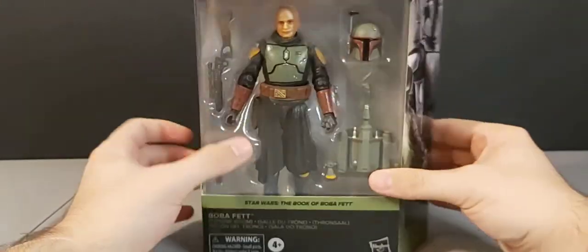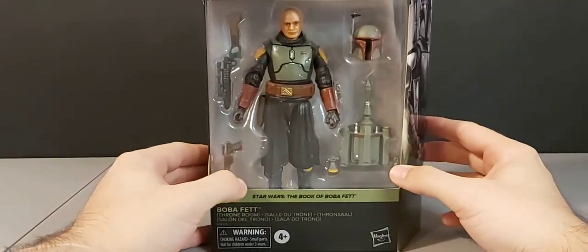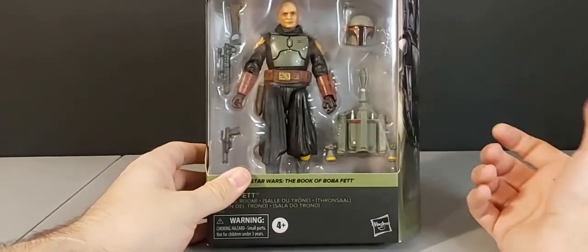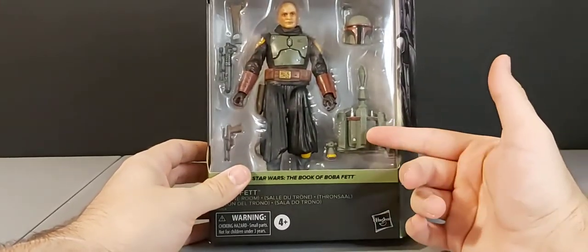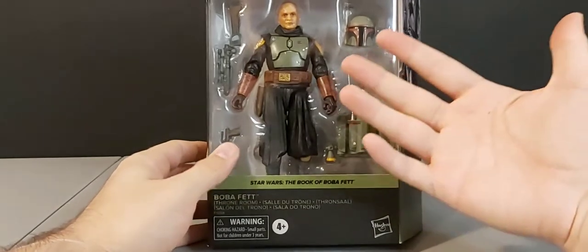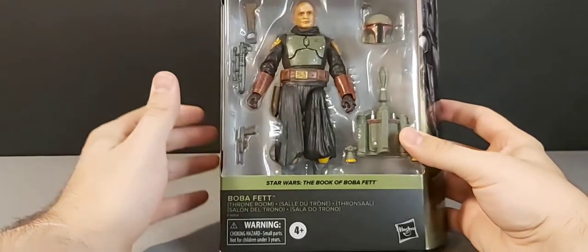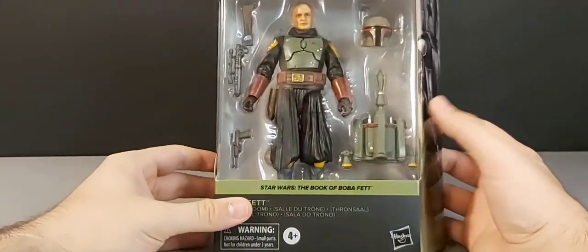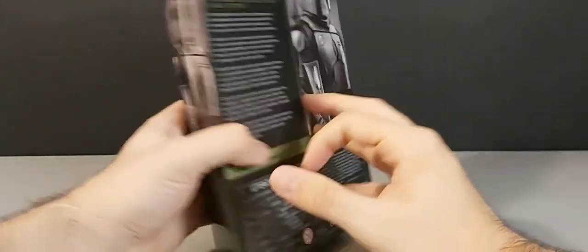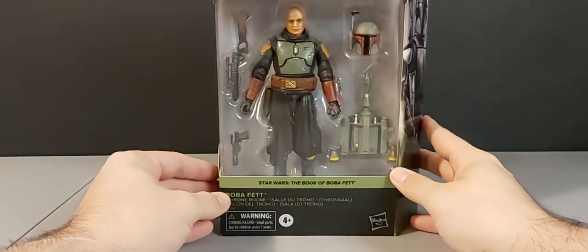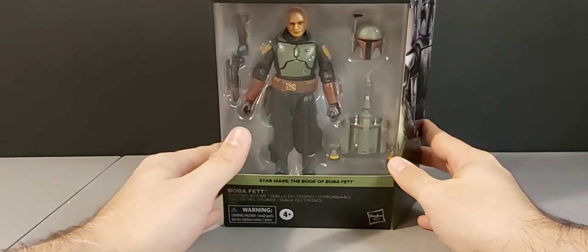Honestly, what makes this figure deluxe? The fact that he comes with a removable helmet. That shouldn't count. Is it the jetpack, which is an accessory that we've seen with Boba Fett's in the past at a regular price? His blaster and his pistol. Like, how does that make it a deluxe figure? I have no idea. Hasbro's just milking us. And we're suckers. So, we'll buy it.